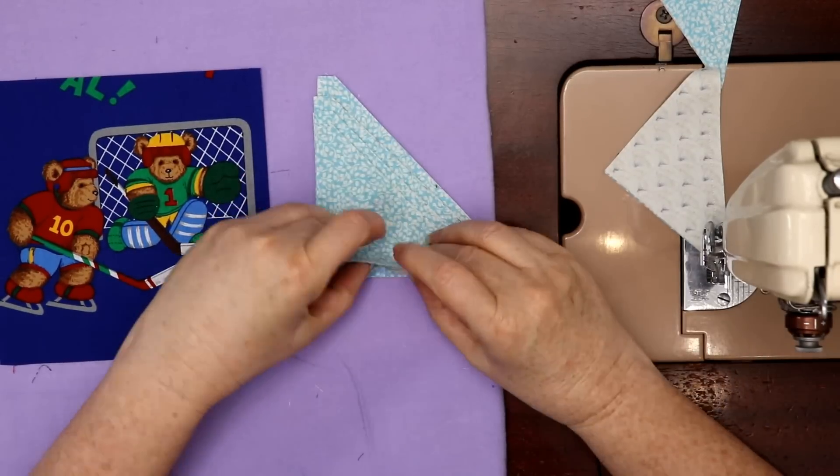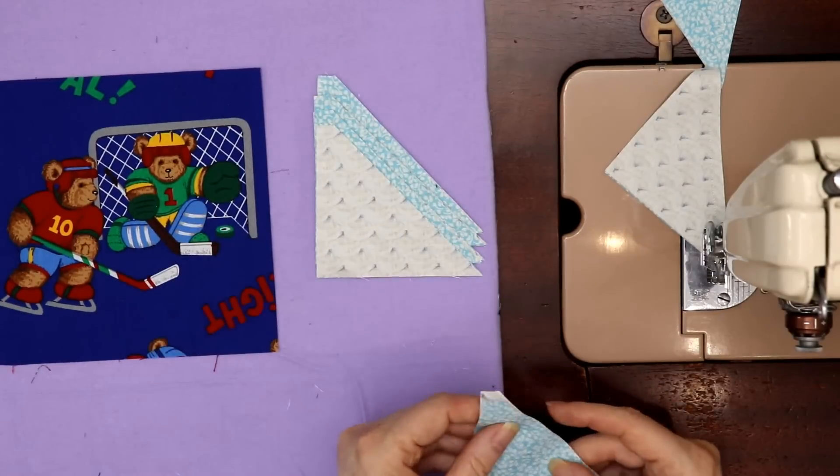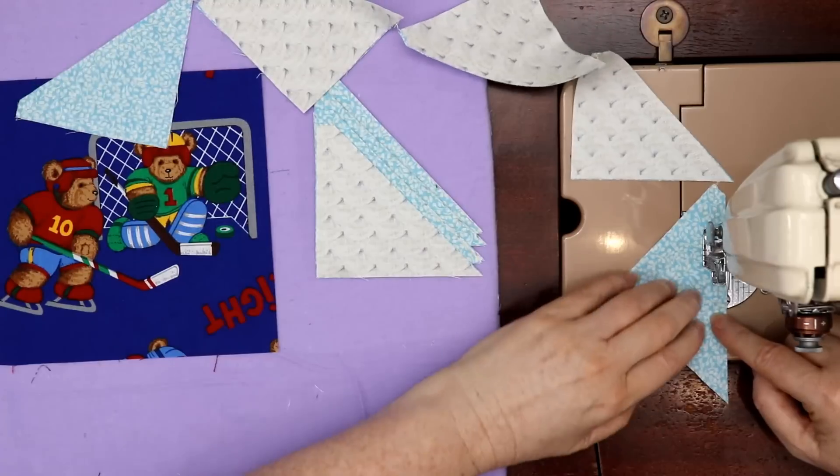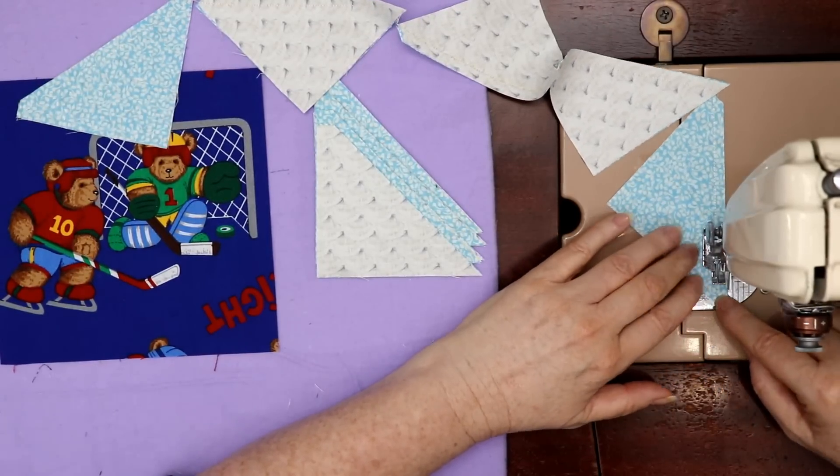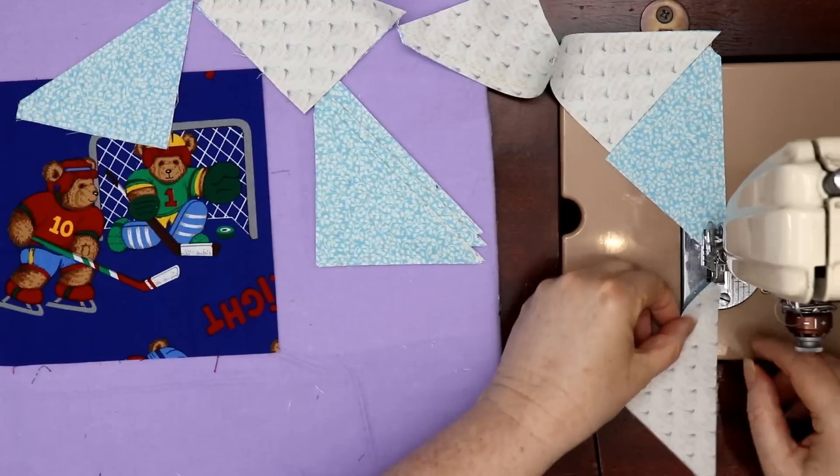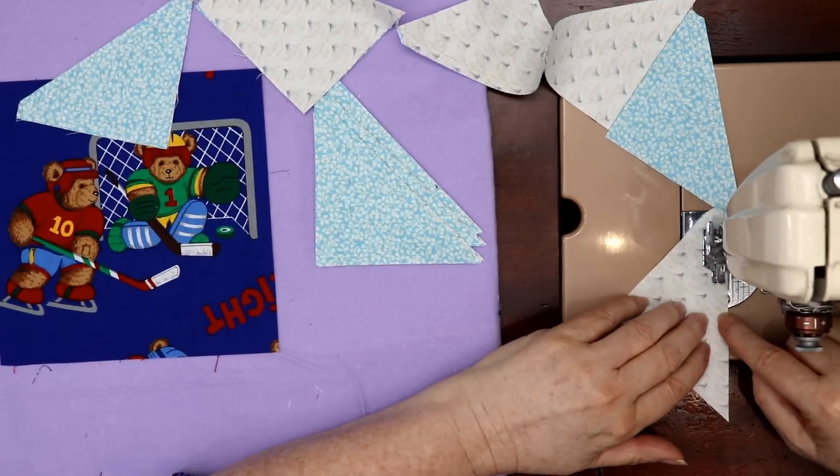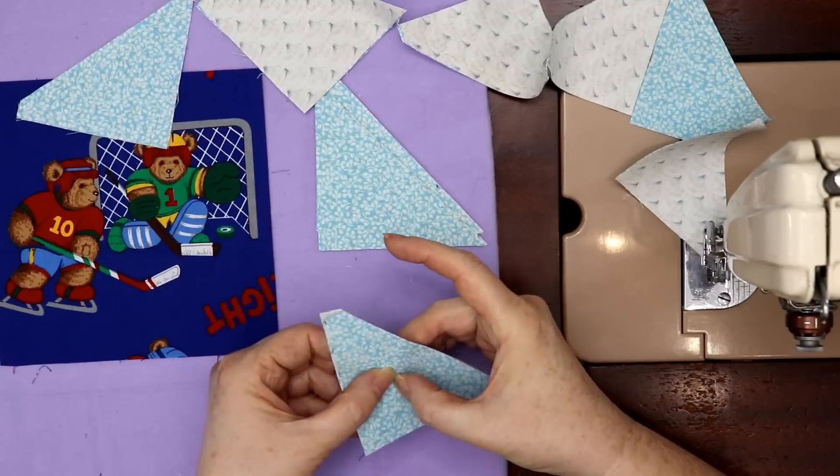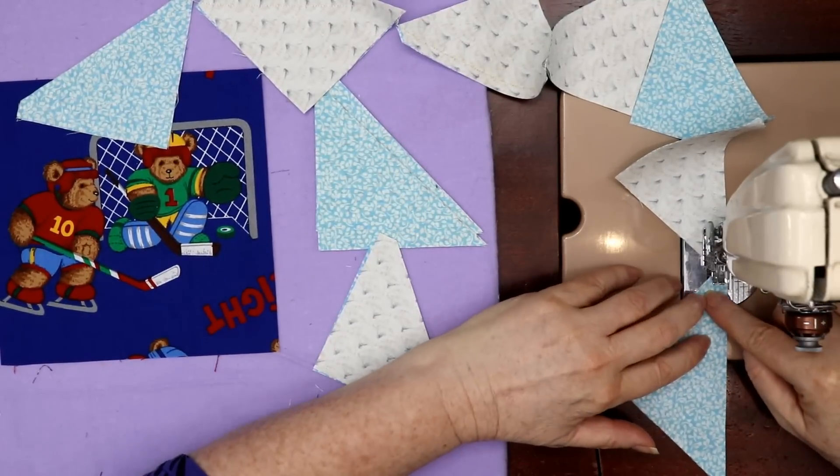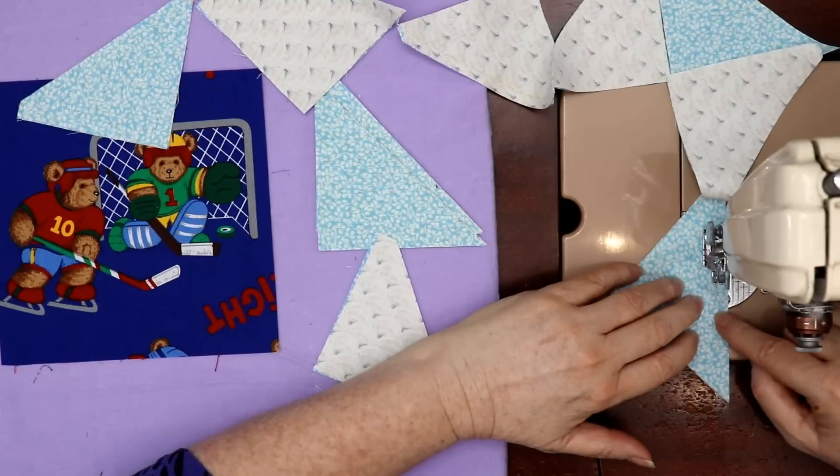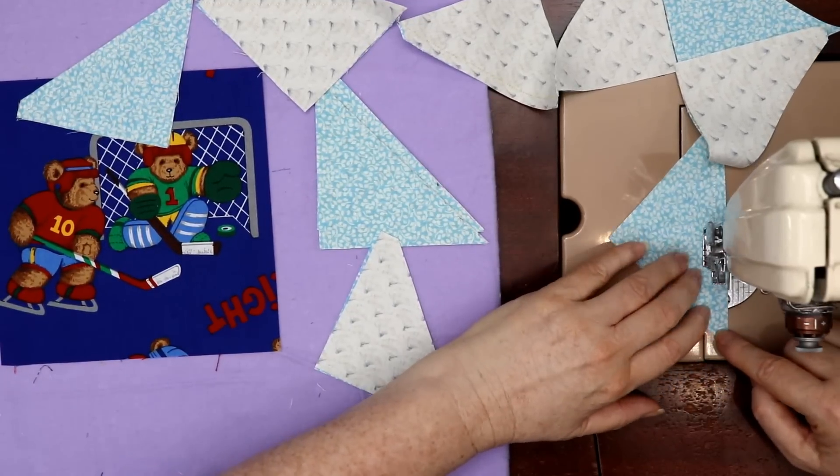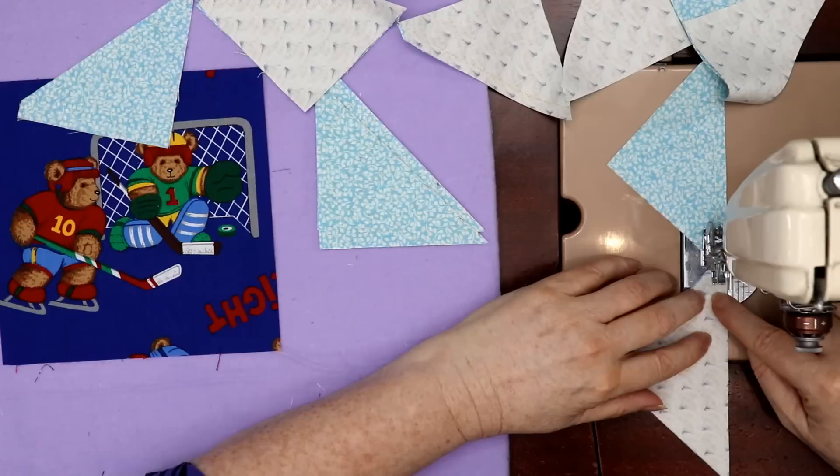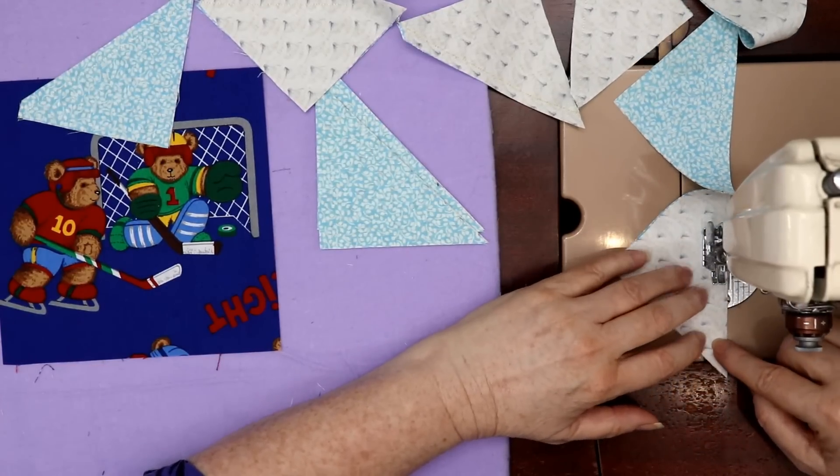I know you could do the four at a time or eight at a time method, that's also acceptable. The problem with the four at a time method is all your seams or all your edges are biased, unless you cut your blocks on the bias. How many people have that piece big enough on a bias in their scraps?